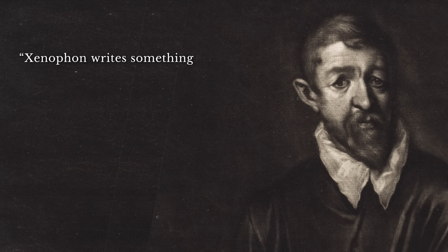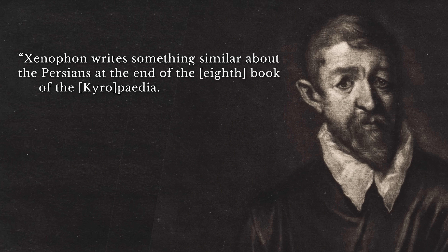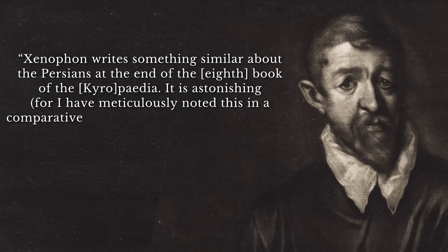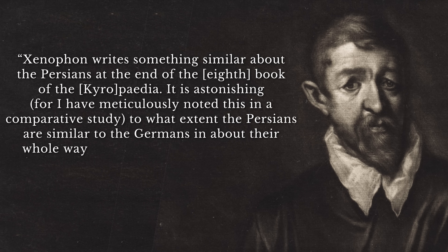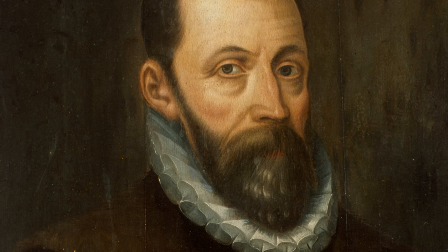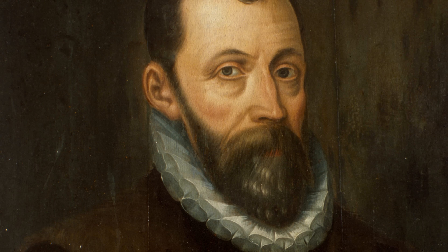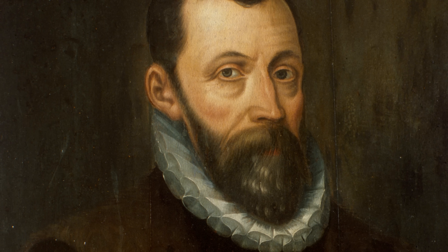Xenophon writes something similar about the Persians at the end of the 8th book of the Cyropaedia. Lipsius wrote: 'It is astonishing, for I have meticulously noted this in a comparative study, to what extent the Persians are similar to the Germans in about their whole way of life, even in their language.' He noted similarities between Dutch and Persian words, but also pointed out that many Persian words seemed more similar to Latin than German, questioning the exclusive relationship between Persian and Germanic languages and the usefulness of language comparison.